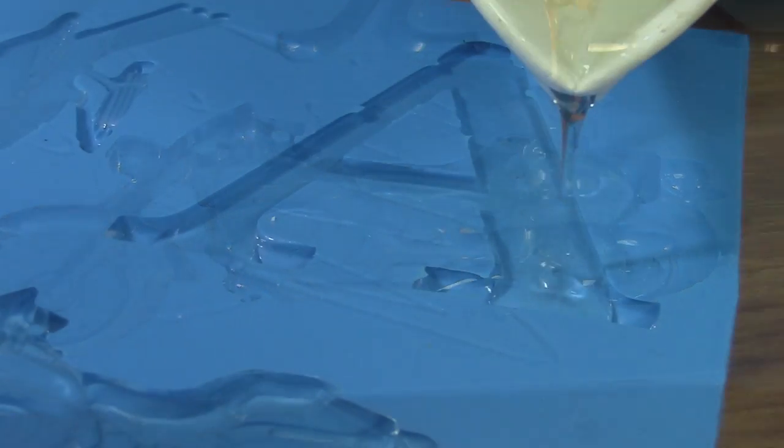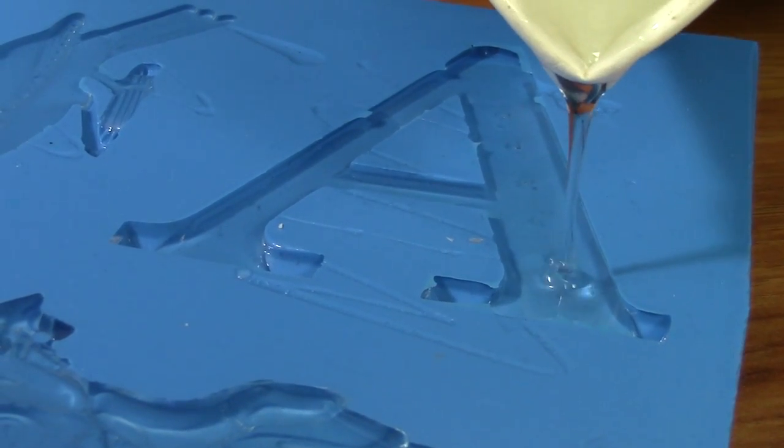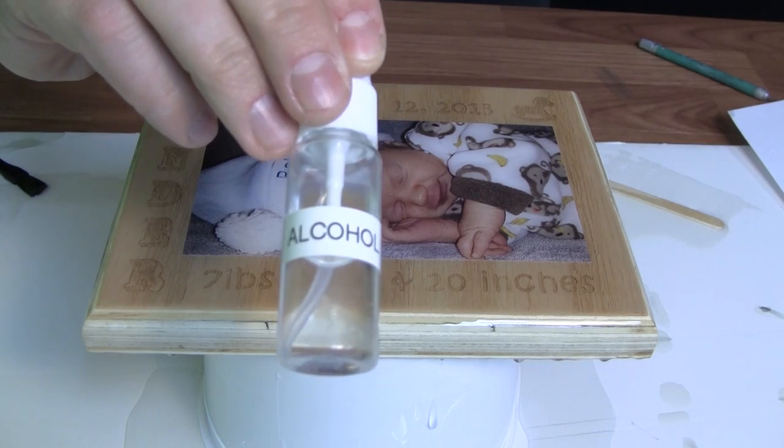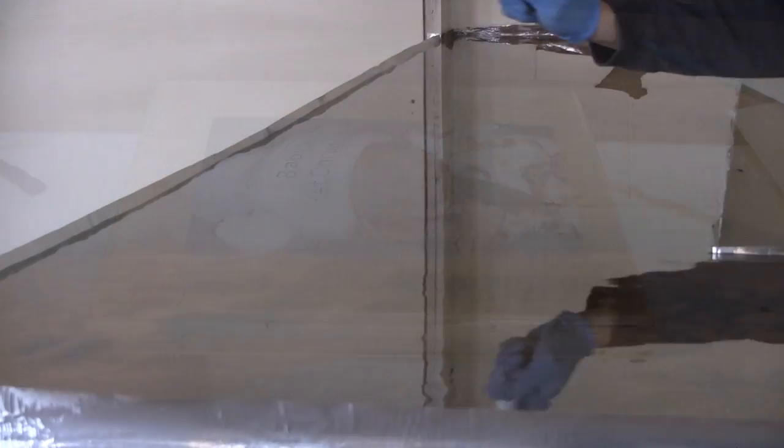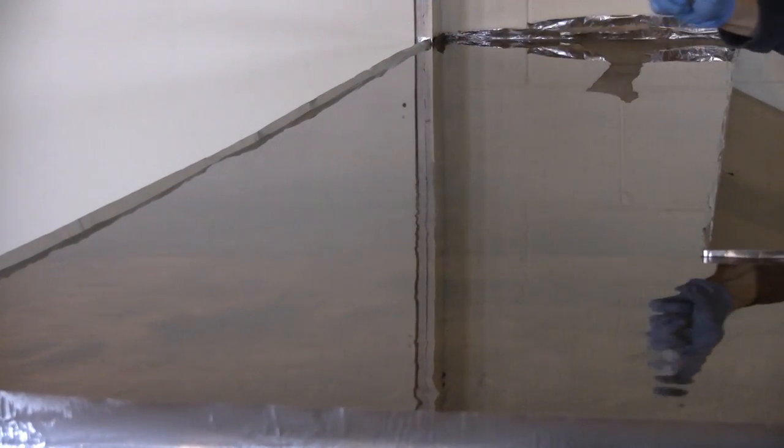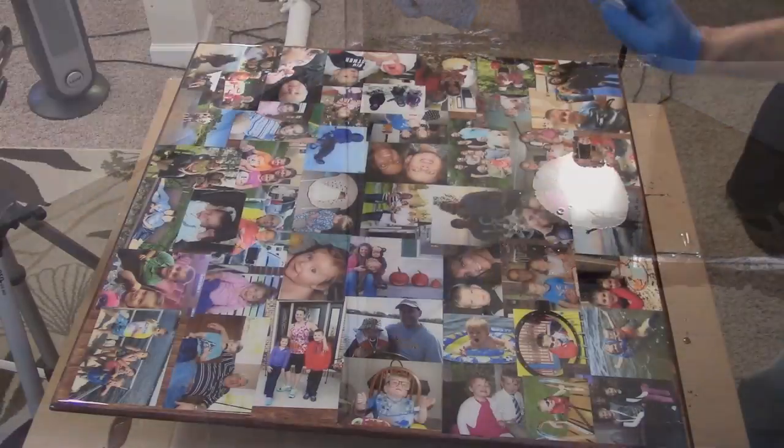The slow cure time allows air bubbles to rise to the surface and escape. Once ClearCast is self-leveled, a light mist of isopropyl alcohol over the surface can help pop air bubbles at or near the surface.